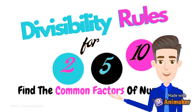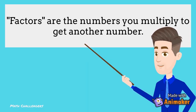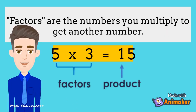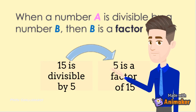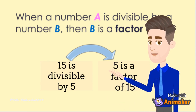Now, how do we use the divisibility rules for 2, 5, and 10? To find common factors of numbers. As discussed in our previous video, factors are numbers you multiply to get another number. For example, 5 times 3 equals 15, so 5 and 3 are factors of 15. Remember, when a number A is divisible by a number B, then B is a factor of A. So if 15 is divisible by 5, then 5 is a factor of 15.